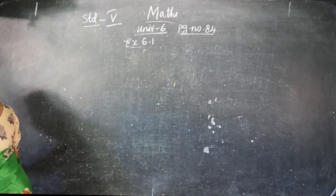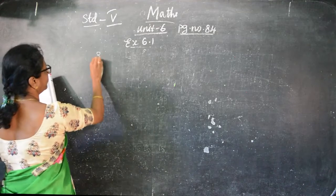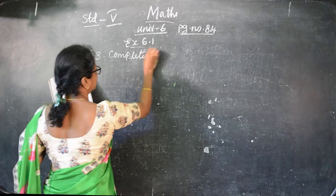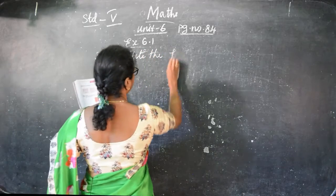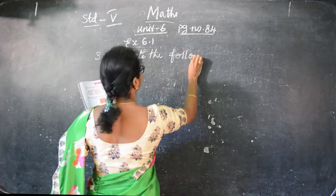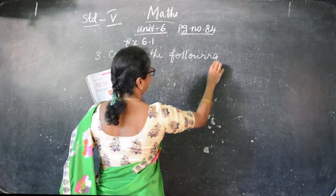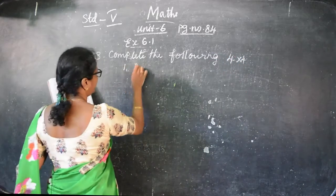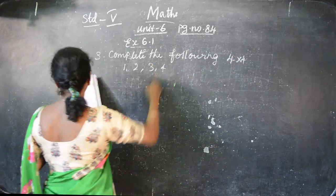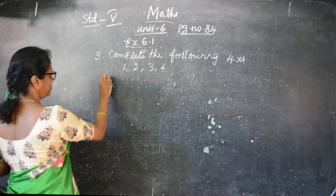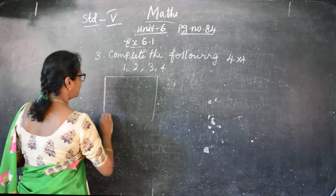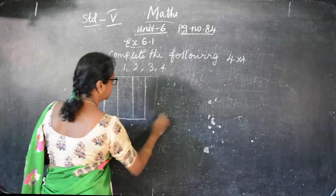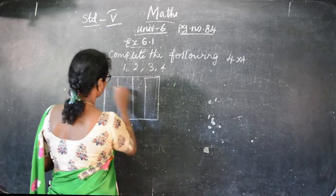Complete the following - third sum, complete the following using 4 into 4. Using the numbers 1, 2, 3 and 4. Here they are given the 4 squares and the same thing - 1, 2, 3, every putting - like that you have to put in the same squares also.